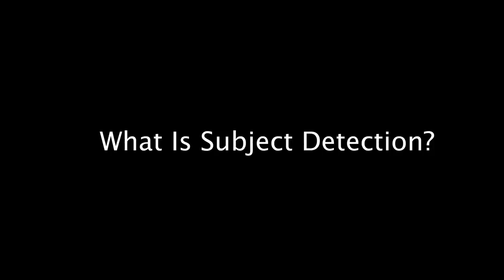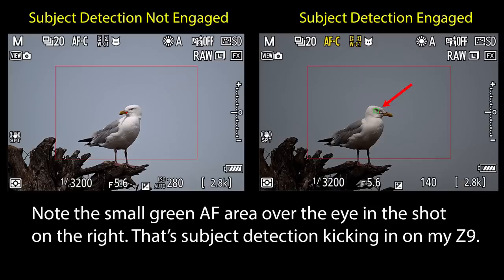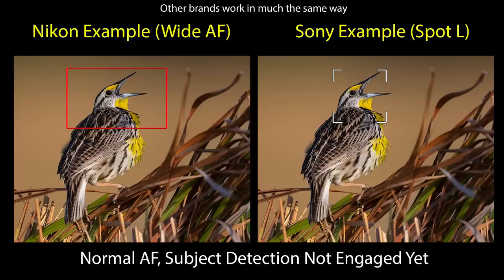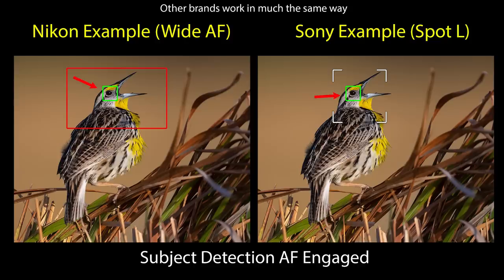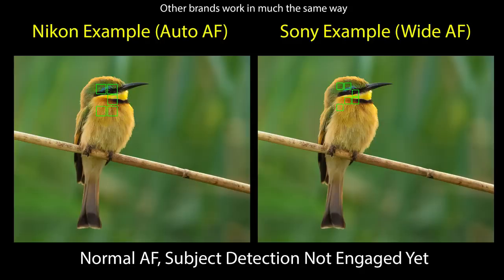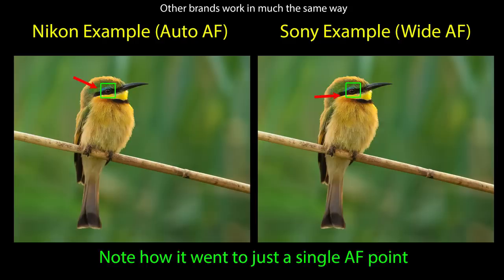Before we get into the tips, let's first define what subject detection actually is. Subject detection is a refinement of your AF area, typically targeting the subject itself, the subject's face, or better yet, the subject's eyes. People tend to think that if they point an AF area at a subject and it focuses, then it must be using subject detection, but that's not necessarily the case. When subject detection kicks in, you'll typically see the normal AF area refined to a smaller single AF area targeting the subject itself, its face, or its eye. With a predefined AF area like Nikon wide or Sony spot AF, you'll see the main AF area and then a smaller box pop up refining the focus area. In Nikon Auto AF or Sony wide AF, a series of boxes turns into a single box when subject detection kicks in.